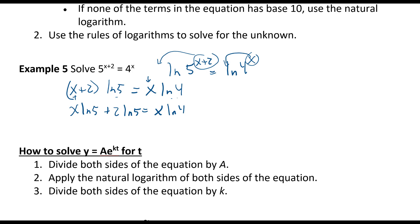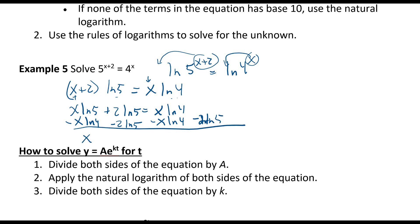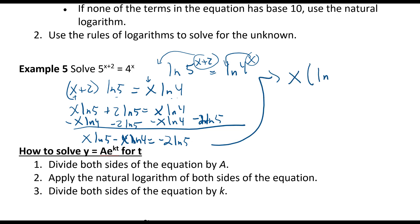To get our x terms to one side, it's just like solving a regular equation. Subtracting 2·ln5 from both sides and moving terms gives us x·ln5 minus x·ln4 equals negative 2·ln5. We can factor out x to get x times (ln5 minus ln4) equals negative 2·ln5.